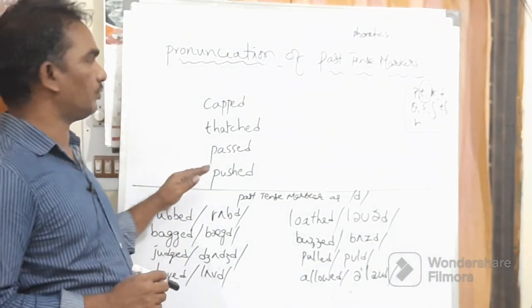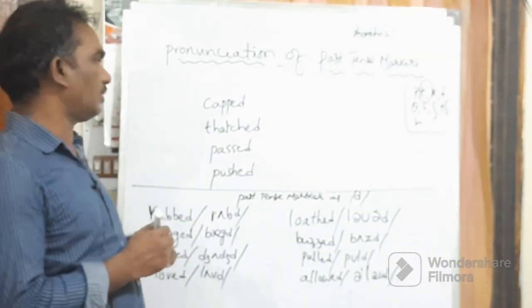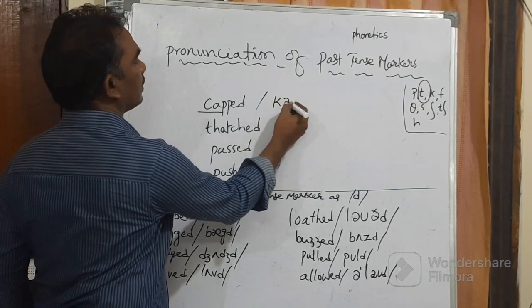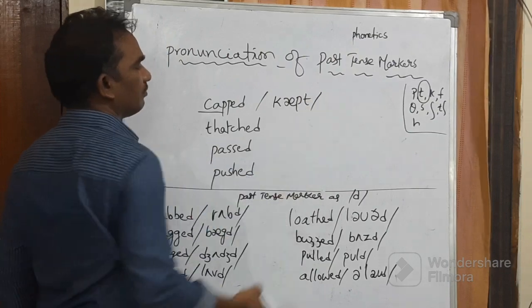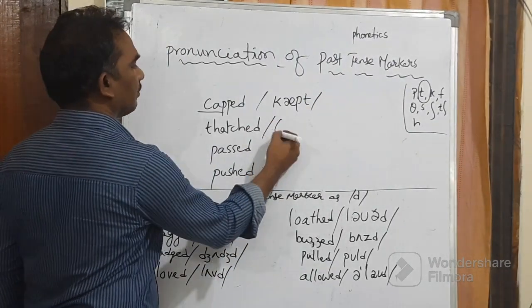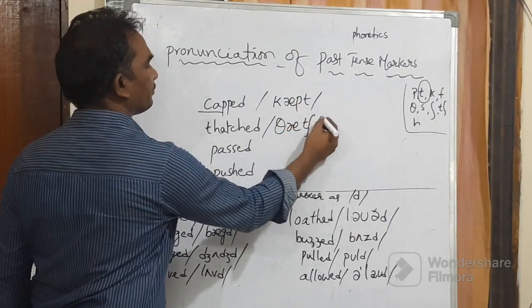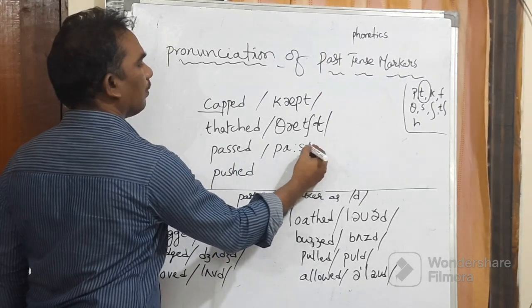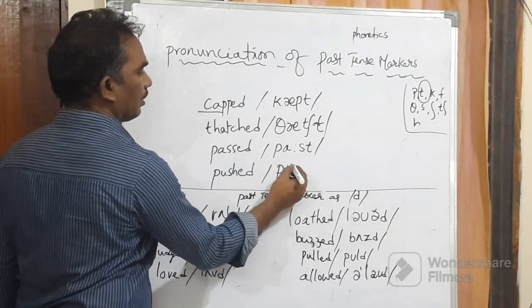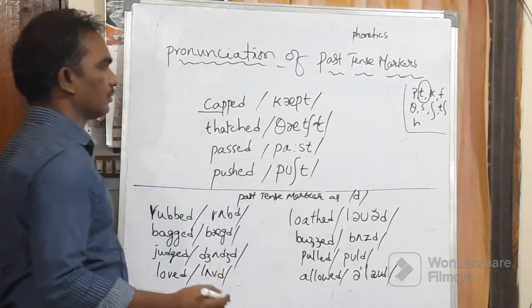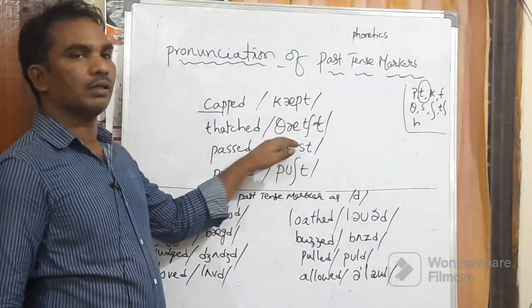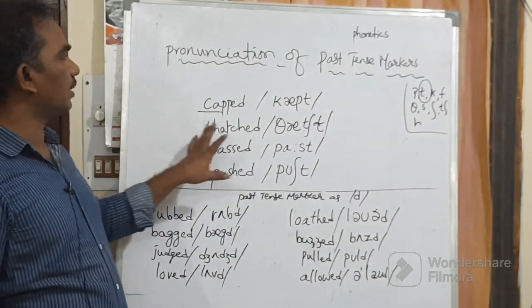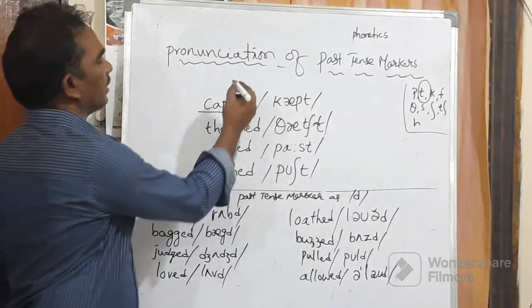Let's look at more examples. If the basic word or present tense word ends with a voiceless sound, the past tense marker will become /t/. For example: 'cap' → 'capped,' 'thatch' → 'thatched,' 'touch' → 'touched,' 'push' → 'pushed.' So that is Rule 1: the past tense marker is pronounced as /t/ when the base word ends with a voiceless sound.